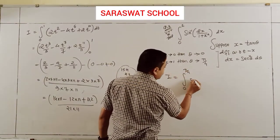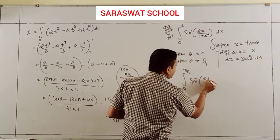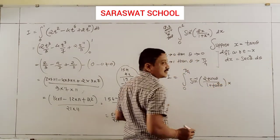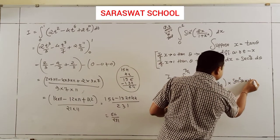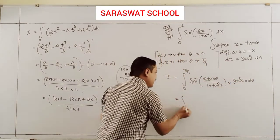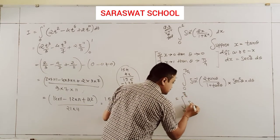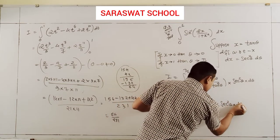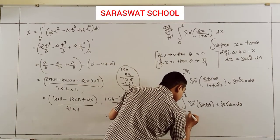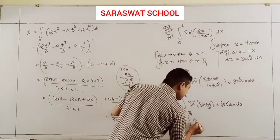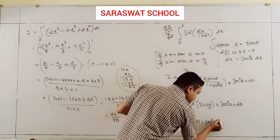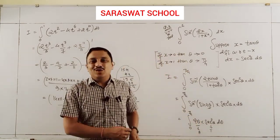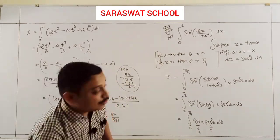The integrand becomes sin⁻¹(sin2θ) times sec²θ dθ, which simplifies to 2θ times sec²θ dθ, from 0 to π/4. Now in LIT (integration by parts): first function 2θ, second function sec²θ. I operate the product rule.